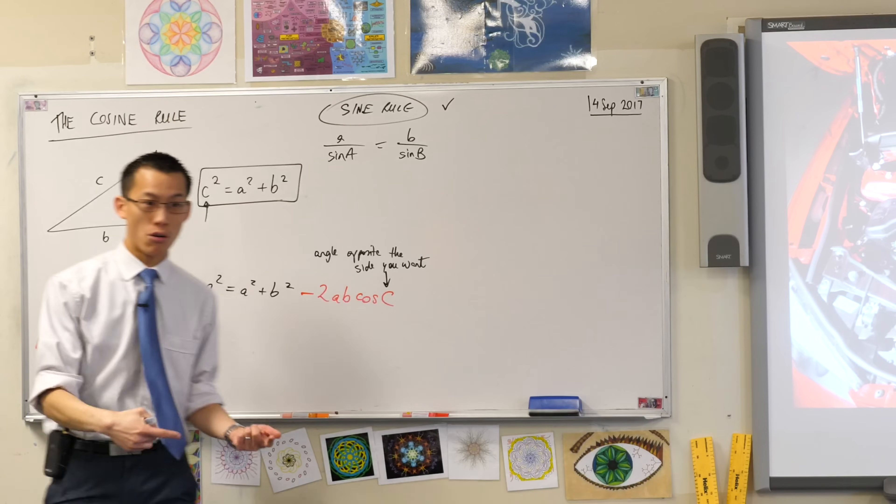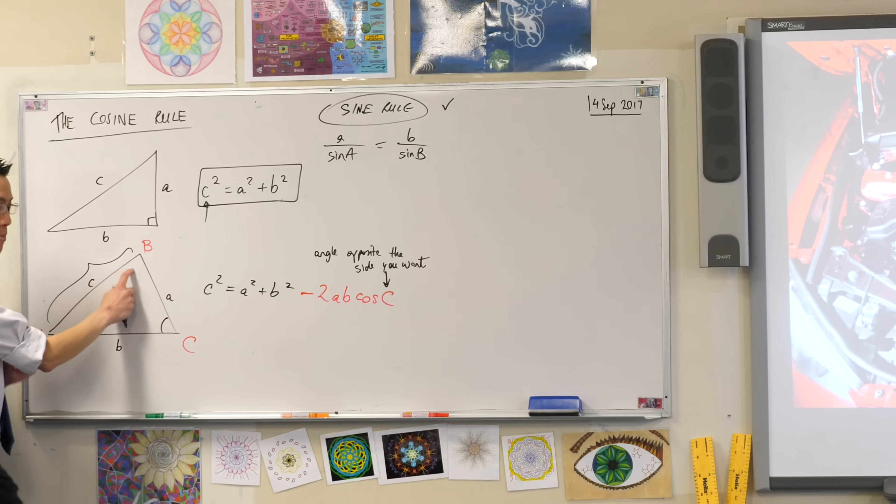So, for instance, you can actually know all of the angles in this triangle. You can know A and B and C. But if you want this side, you need to pick that angle.